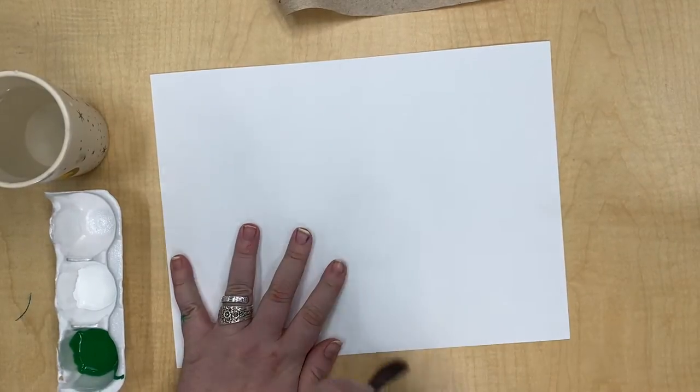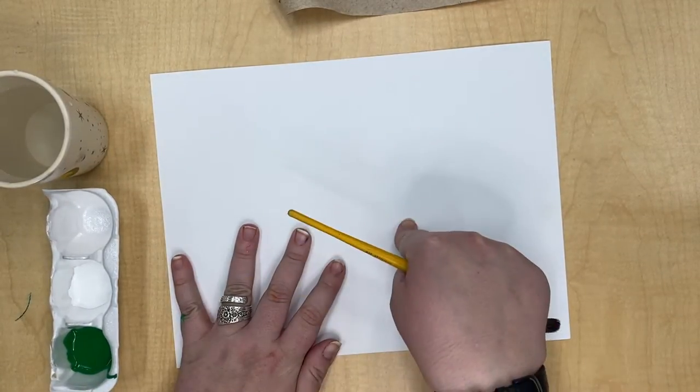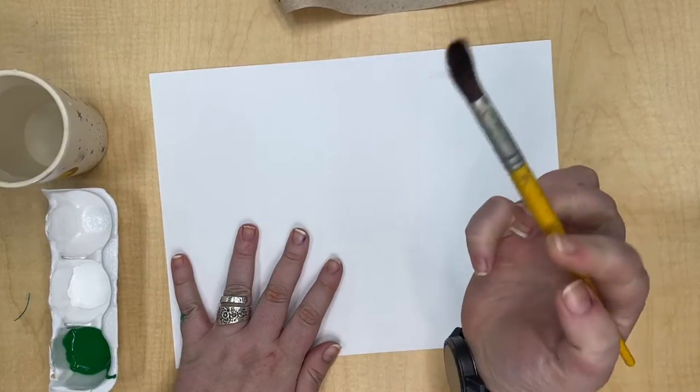The first thing we have to do is paint the background of our feather. So we are taking a piece of paper, some paint, a paintbrush, a cup, and a paper towel.